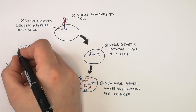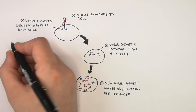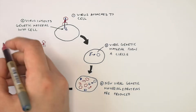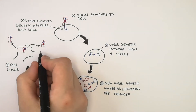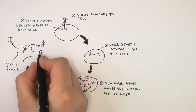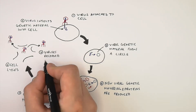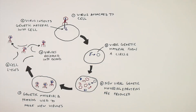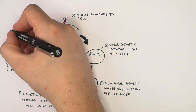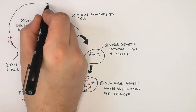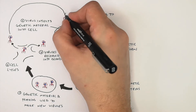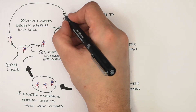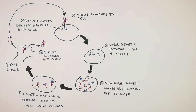The cell then undergoes cell lysis. Once the viruses have been produced and there are too many inside the cell, the cell will break open. The viruses are then released into the blood and other parts of the body, where they bind onto other cells and repeat the same process again.